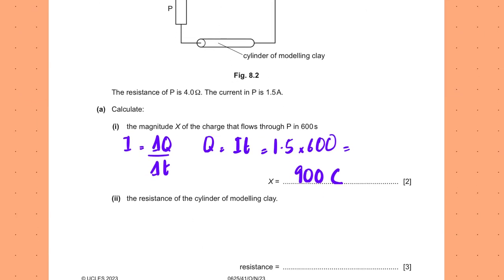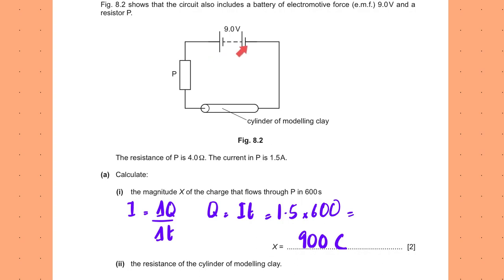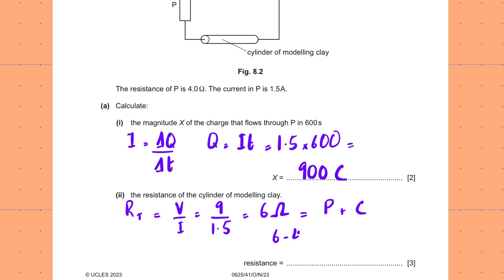Calculate the resistance of the cylinder of modelling clay. With a 9 V EMF and 1.5 A current, total resistance R_T = V/I = 9/1.5 = 6 Ω. Since this is a series circuit, R_T = R_P + R_cylinder. The resistance of P is 4 Ω, so the cylinder's resistance = 6 − 4 = 2.0 Ω.